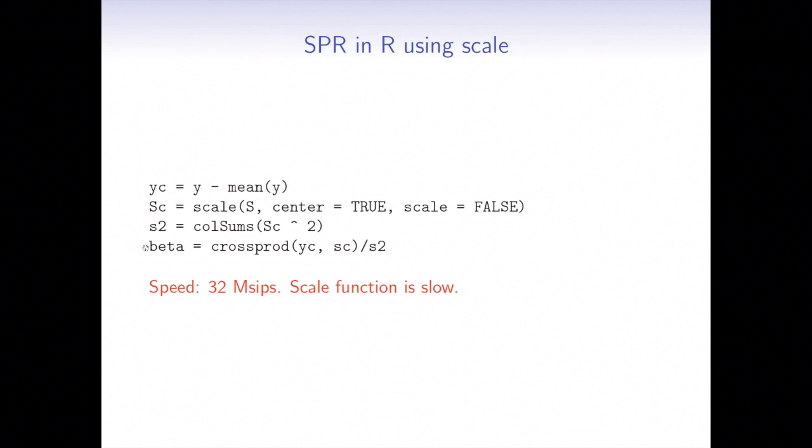And the operation of transpose y with centered SNP is done using cross-product function. And then we see that I achieved a speed of 32 mega-sip, which is actually slower than doing the explicit solution in a loop, which we saw previously. So that is a little bit disappointing. But that is also suggesting that clearly slowing down part is function scale.